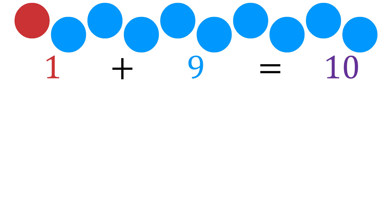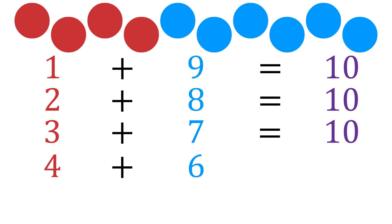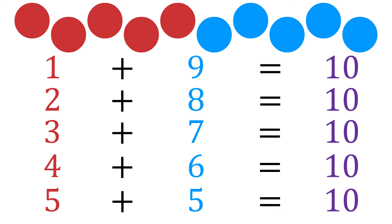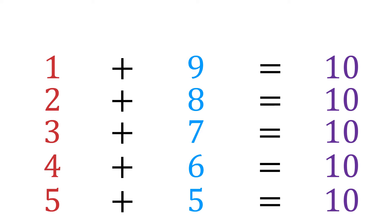It's good to know the numbers that add up to ten. One plus nine equals ten. Two plus eight equals ten. Three plus seven equals ten. Four plus six equals ten. And five plus five equals ten. Let's look at that one more time.